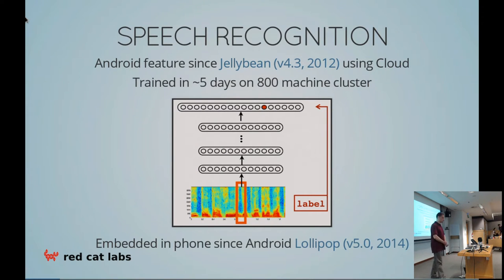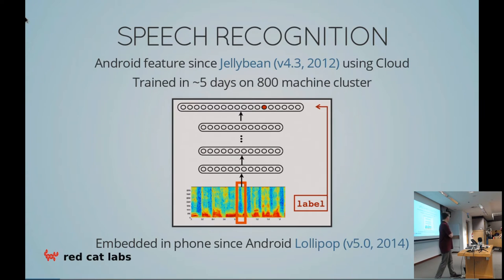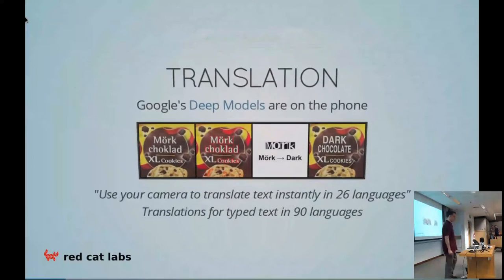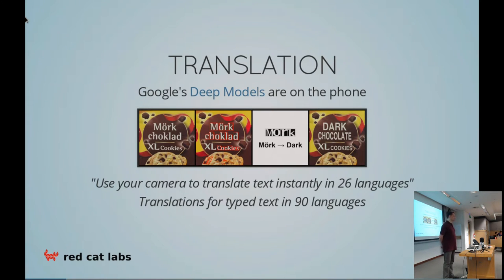On the speech recognition front, since Jelly Bean on Android phones they've been sending your data up to the cloud for speech recognition. But since Lollipop in 2014, it's actually taking place on your phone. If you've got an Android phone, there is a deep learned neural network inside it. Apple also has this stuff but is much less open source about it. Google also has deep models on the phone whereby they can look at images and translate on the fly into the picture — they can pick up the fonts, 26 languages. Insane technology coming from the 90s that is now doable.